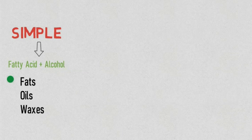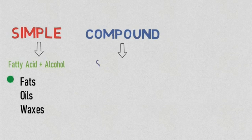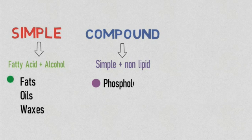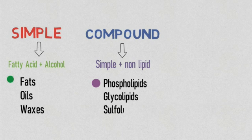Compound lipids are made of a simple lipid and a non-lipid molecule. Adding phosphate groups makes phospholipids. Adding carbohydrates makes glycolipids. Adding sulfur makes sulfolipids, and proteins for lipoproteins.